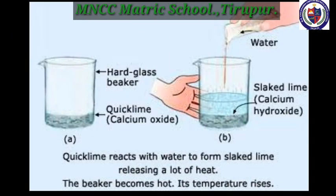For example, when you add water to quick lime, that is calcium oxide, a lot of heat is released to produce slaked lime, that is calcium hydroxide. Quick lime reacts with water to form slaked lime, releasing a lot of heat. The beaker becomes hot and its temperature rises.